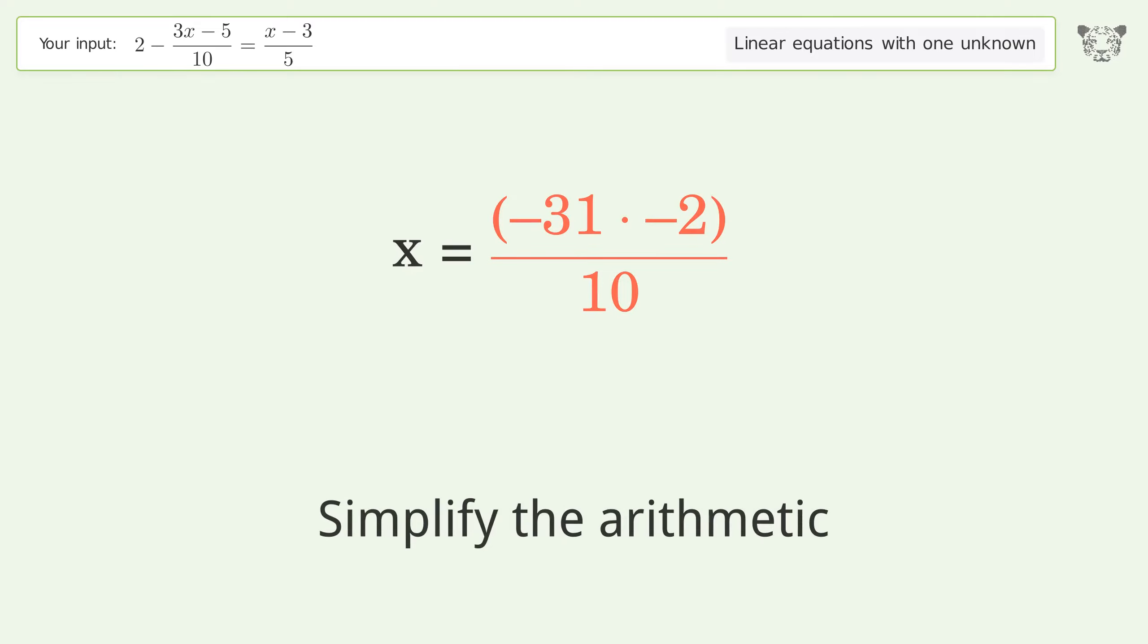Simplify the arithmetic. And so the final result is x equals 31 over 5.